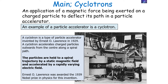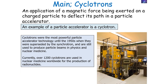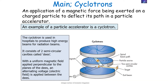A cyclotron accelerates charged particles outwards from the centre along a spiral path. The particles are held to a spiral trajectory by a magnetic field and are accelerated by a varying electrical field. Lawrence was awarded the Nobel Prize in 1939 for this invention. The magnetic field deflects the particle and the electrical field accelerates the particle by changing its speed. Cyclotrons are still used to produce particle beams in physics and nuclear medicine, with over 1,200 cyclotrons used worldwide for the production of radionuclides.